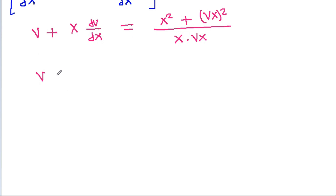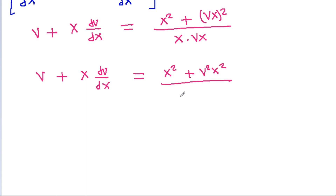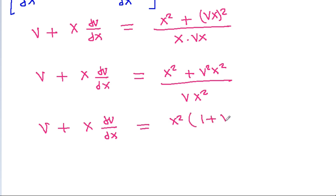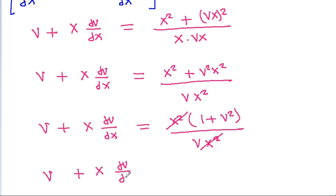So v + x dv/dx = (x² + v²x²) / (vx²). We can take x² common to get x²(1 + v²) / (vx²), and x² cancels. So v + x dv/dx = 1/v + v²/v, which simplifies to 1/v + v.